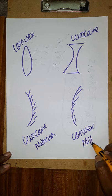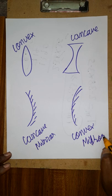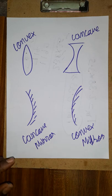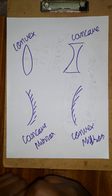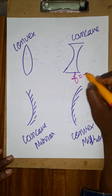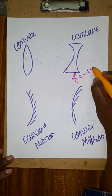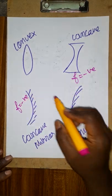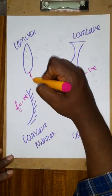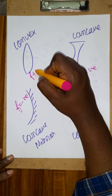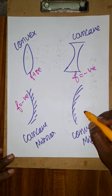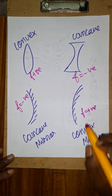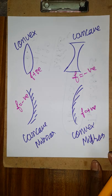Now we are going to see which is positive and which is negative. Concave — sorry — the focal length of a concave lens is negative. The focal length of a concave mirror is negative. The focal length of a convex lens is positive. The focal length of a convex mirror is positive.